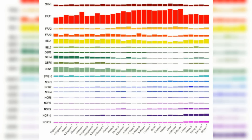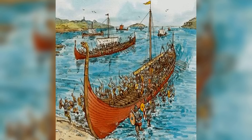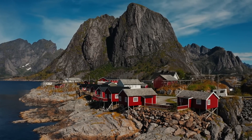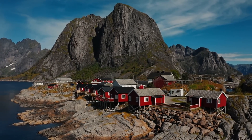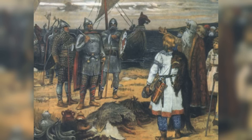A notable finding is the significant Norwegian-like ancestry in Irish clusters, also observed in Orcadian and Scottish clusters, but less so in English and Welsh clusters. This Norwegian ancestry likely originates from the north or western coasts of Norway, regions linked to Norse Viking activity, consistent with historical accounts of Viking presence in Ireland. Additional analysis showed notable Irish, Scottish, and Orcadian ancestry in modern Norway, particularly in western regions. The analysis estimates up to 20% Norwegian ancestry in Ireland, though a lower limit could not be determined.